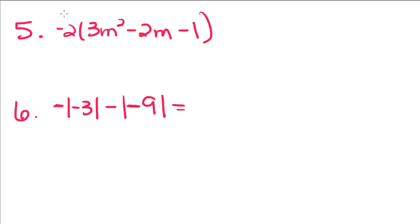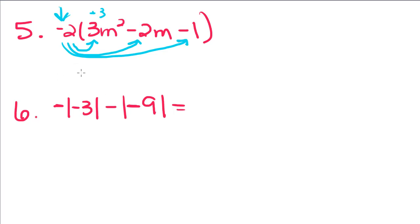Now when I have this negative out front, it tells me to take the opposite. This 2 right here tells me to multiply each one of these terms by 2, and this negative tells me to take the opposite sign. So this is positive 3 — I'm going to take the opposite sign, which is negative, of 2 times 3, which is 6. And then this m squared stays the same. I have negative 2m, so I take the opposite, which is positive, of 2 times 2, which is 4m. And then this last one is negative 1 — I take the opposite, which is positive, of 2 times 1, which is 2.